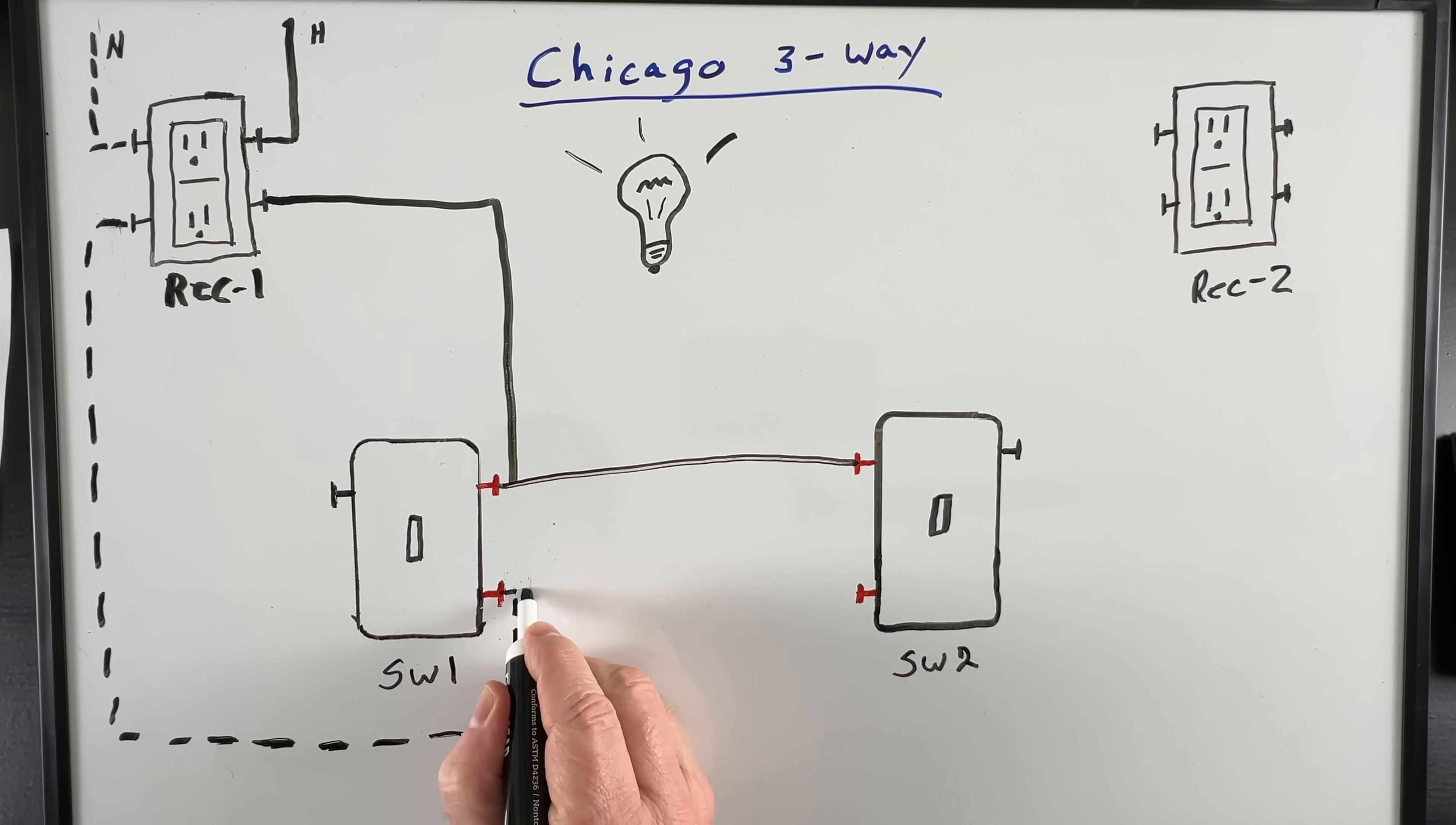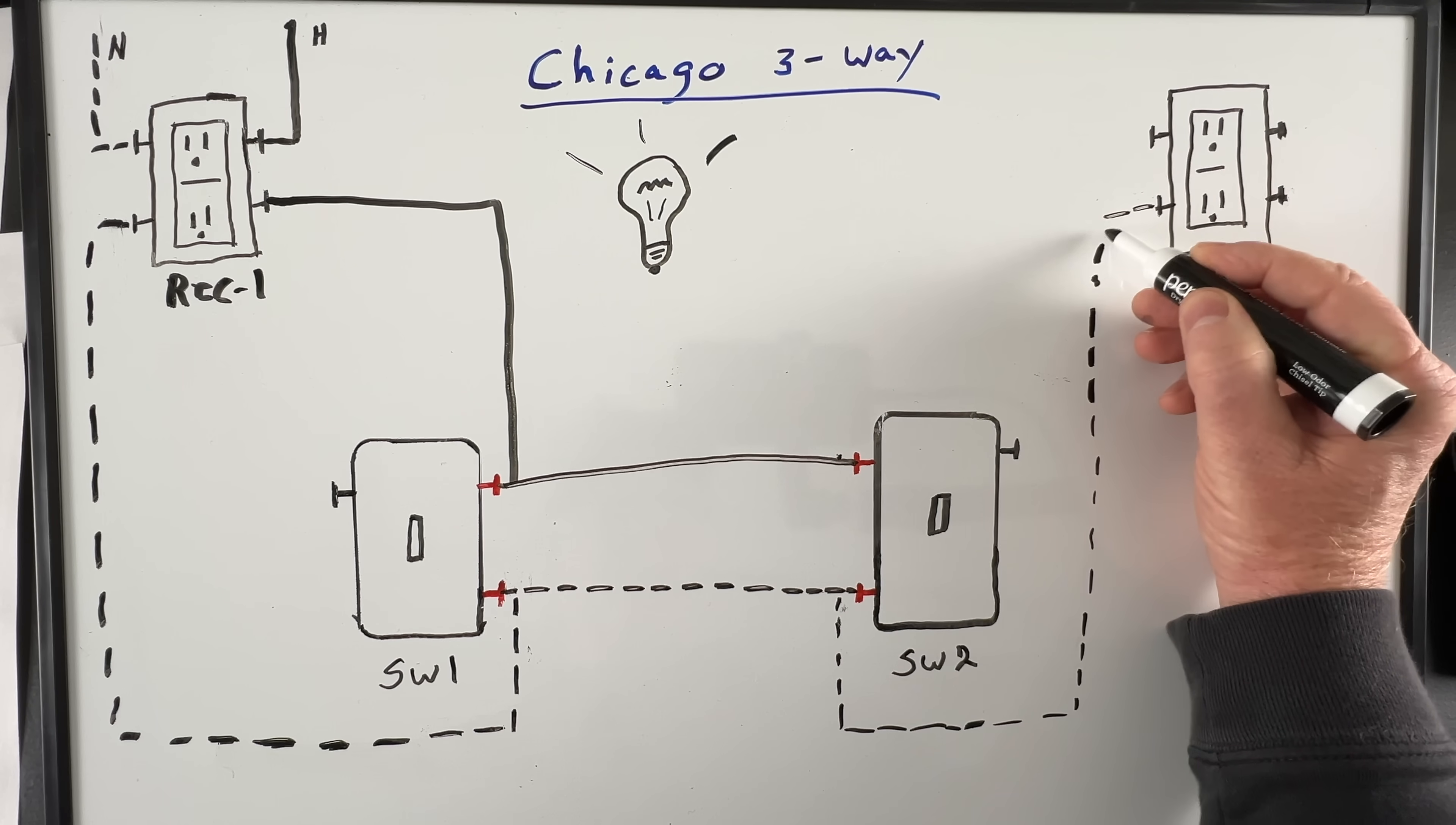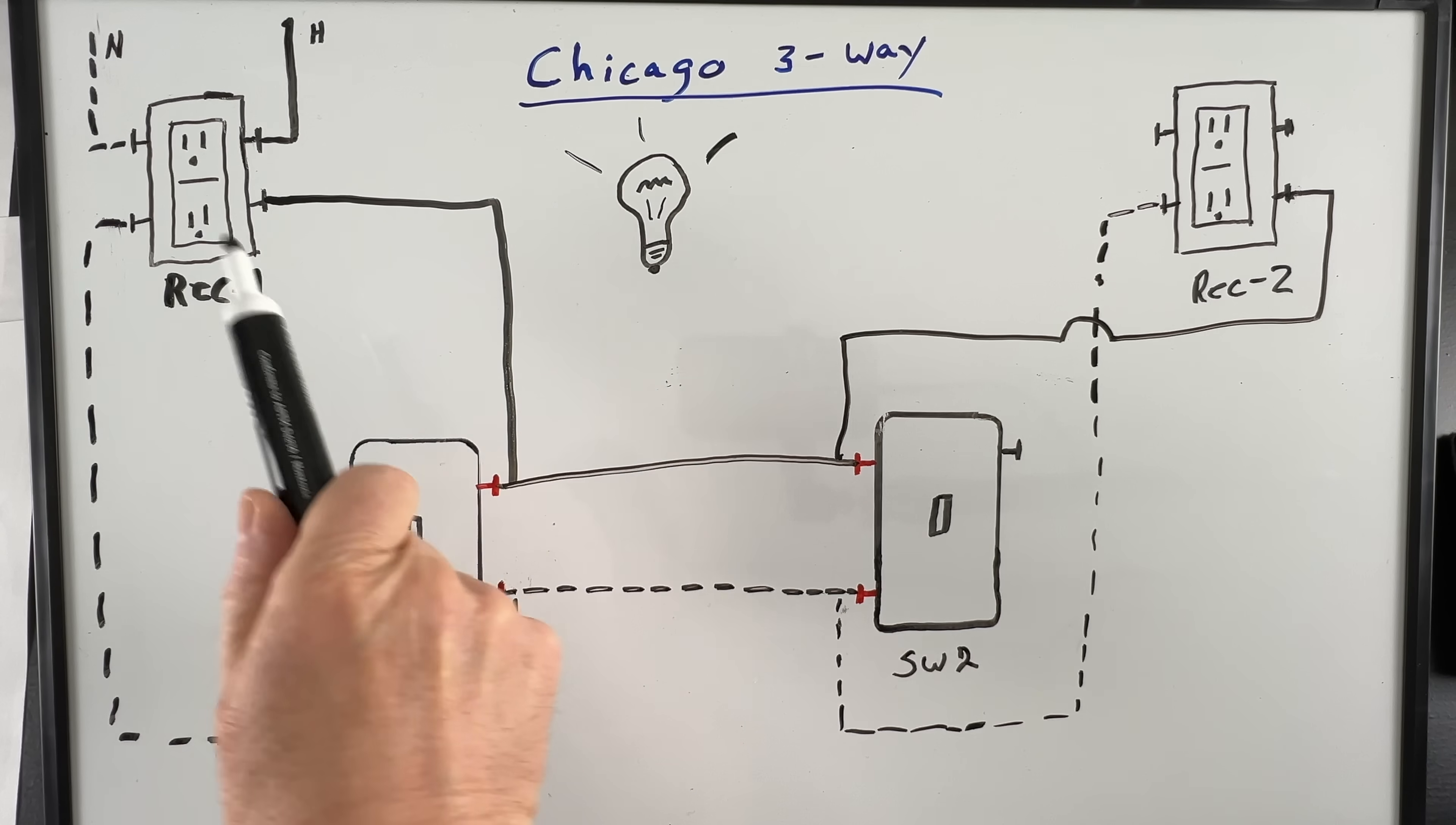Then we'll carry our white neutral wire from the gold traveler screw on switch one to the gold traveler screw on switch two. I know what you're thinking, this looks like a short circuit, but it's not. Then from this same traveler screw we'll carry our neutral wire up to the neutral terminal on the second receptacle, and then our hot wire will jump over to the hot terminal on receptacle number two.